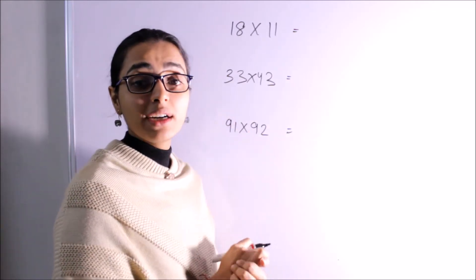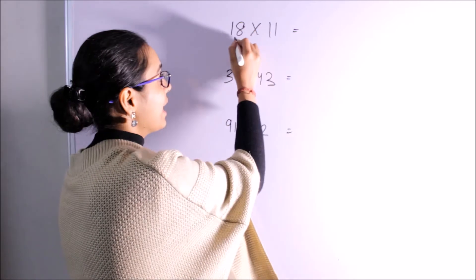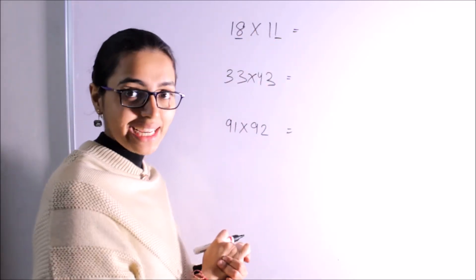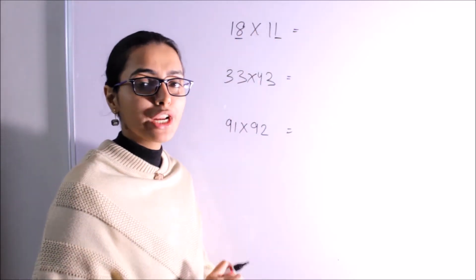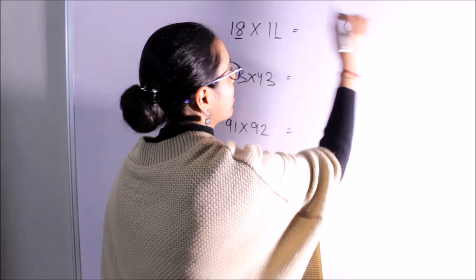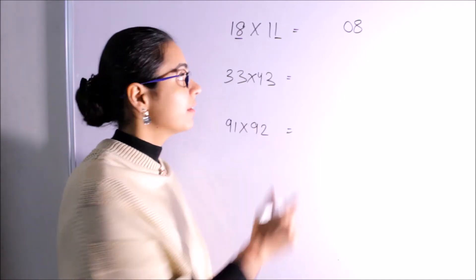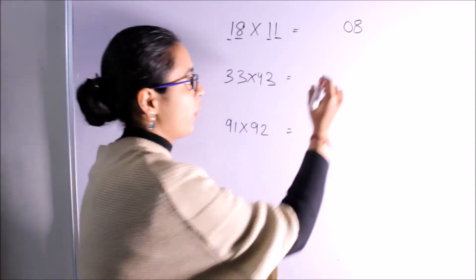So, the first thing I have to do is to multiply the one-digit numbers. 8 into 1 will be 8. If it is single-digit, do not forget to mention a zero before it. Now my next step is to multiply the tens digits. 1 into 1, which is 1.